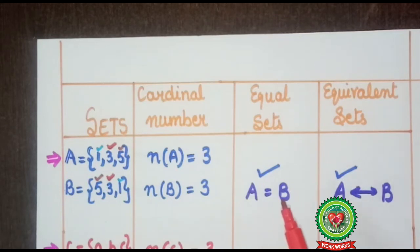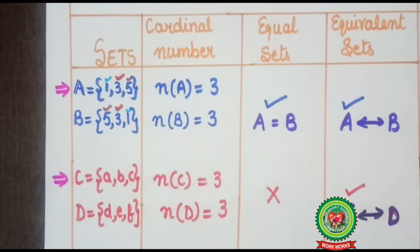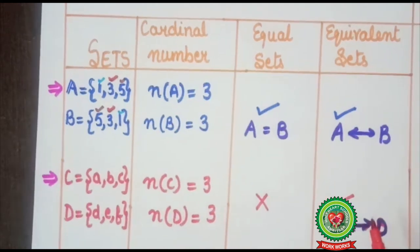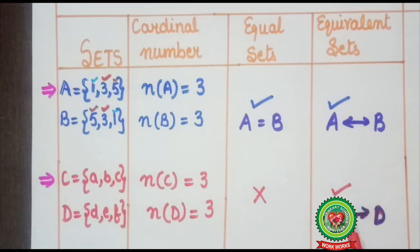But if we take another example — set C is {A, B, C} with cardinal number 3, and set D is {D, E, F} with cardinal number 3. The cardinal numbers are the same, so they are equivalent sets. But the elements are not the same, so the sets are not equal. This shows that equivalent sets may or may not be equal.